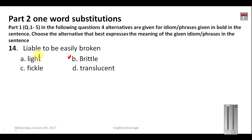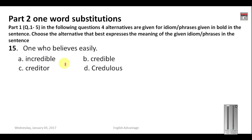Question 15: 'One who believes easily' — the person who believes easily is called 'credulous.' That completes Part 3 on one-word substitution.